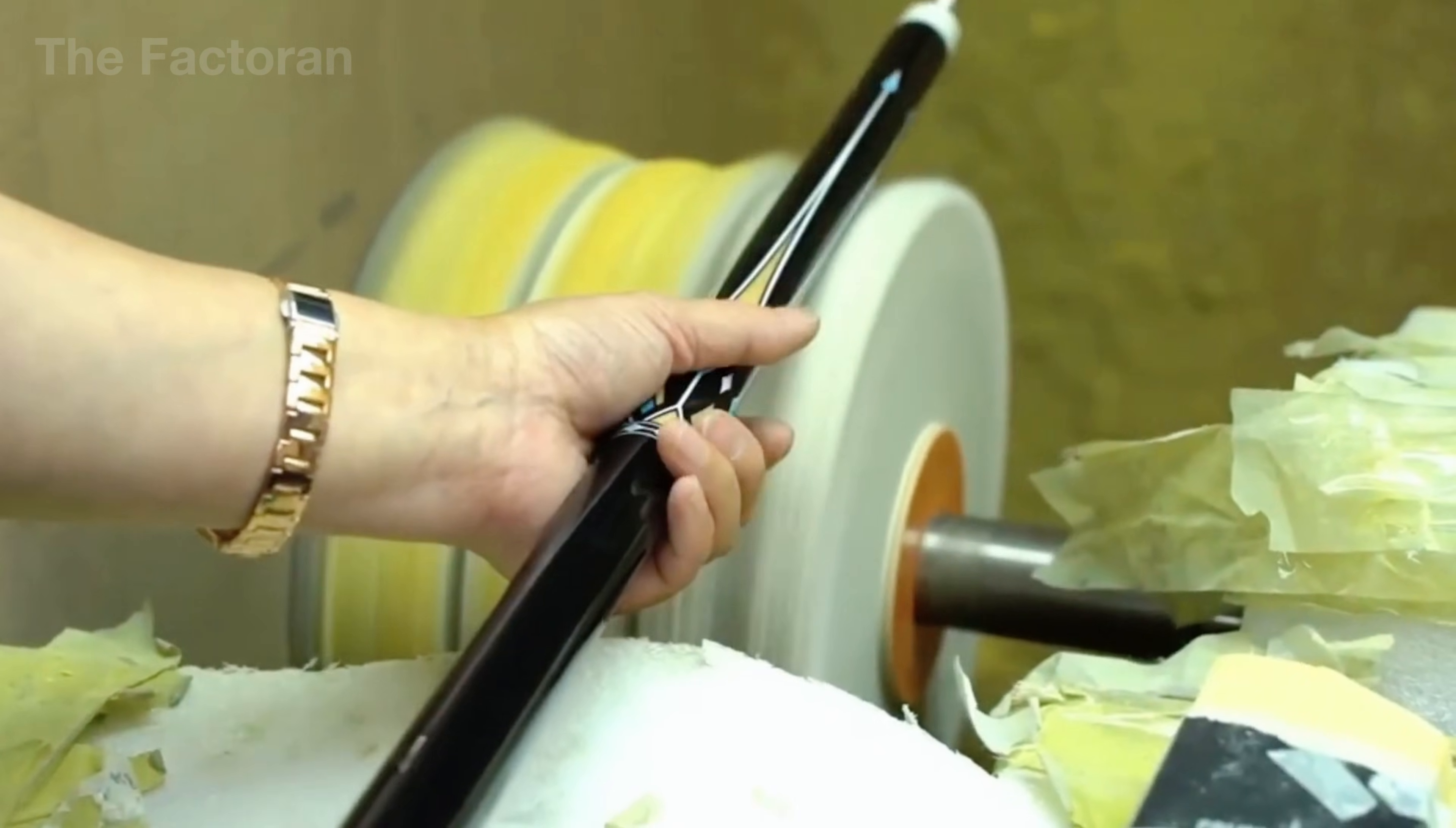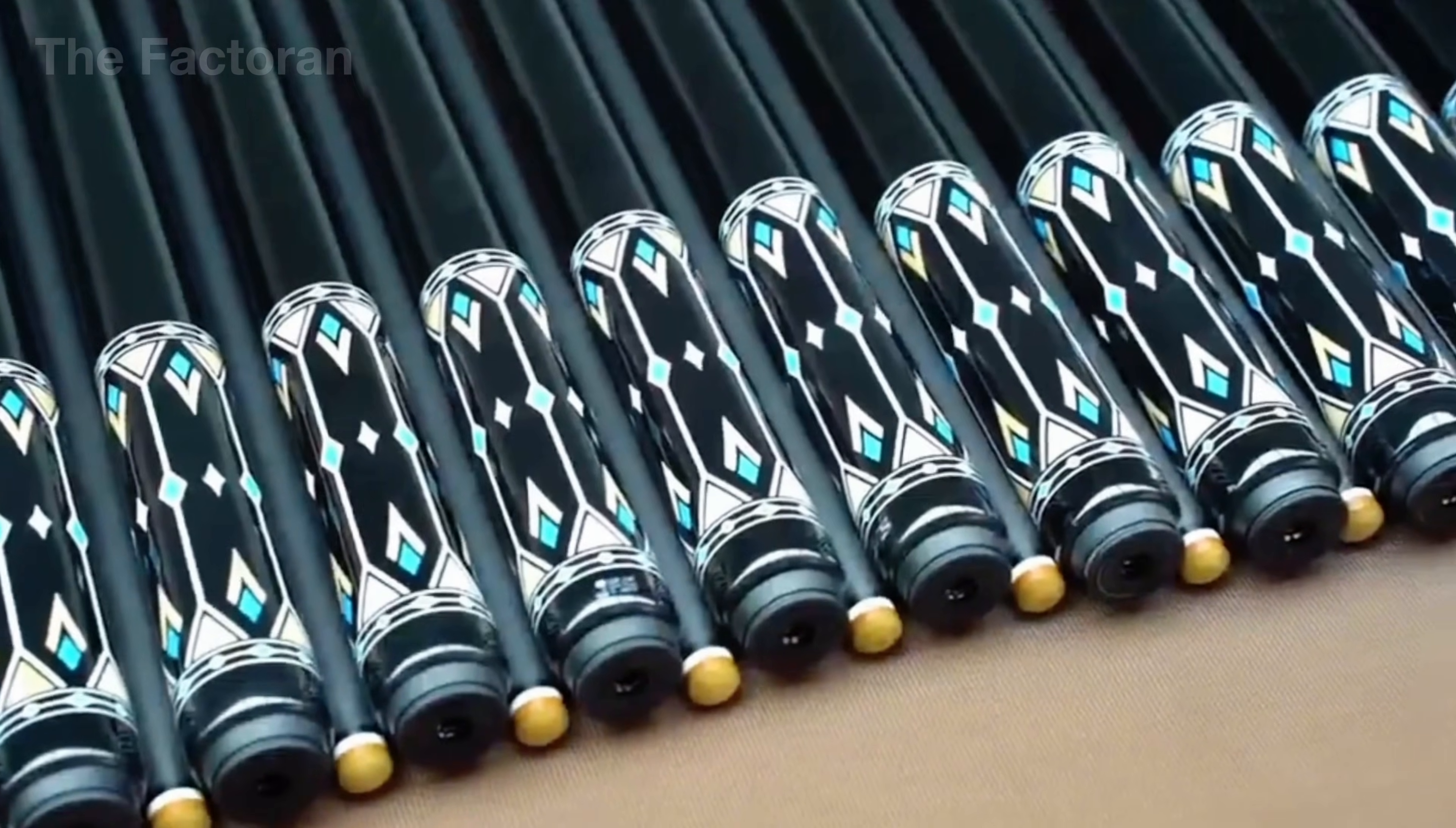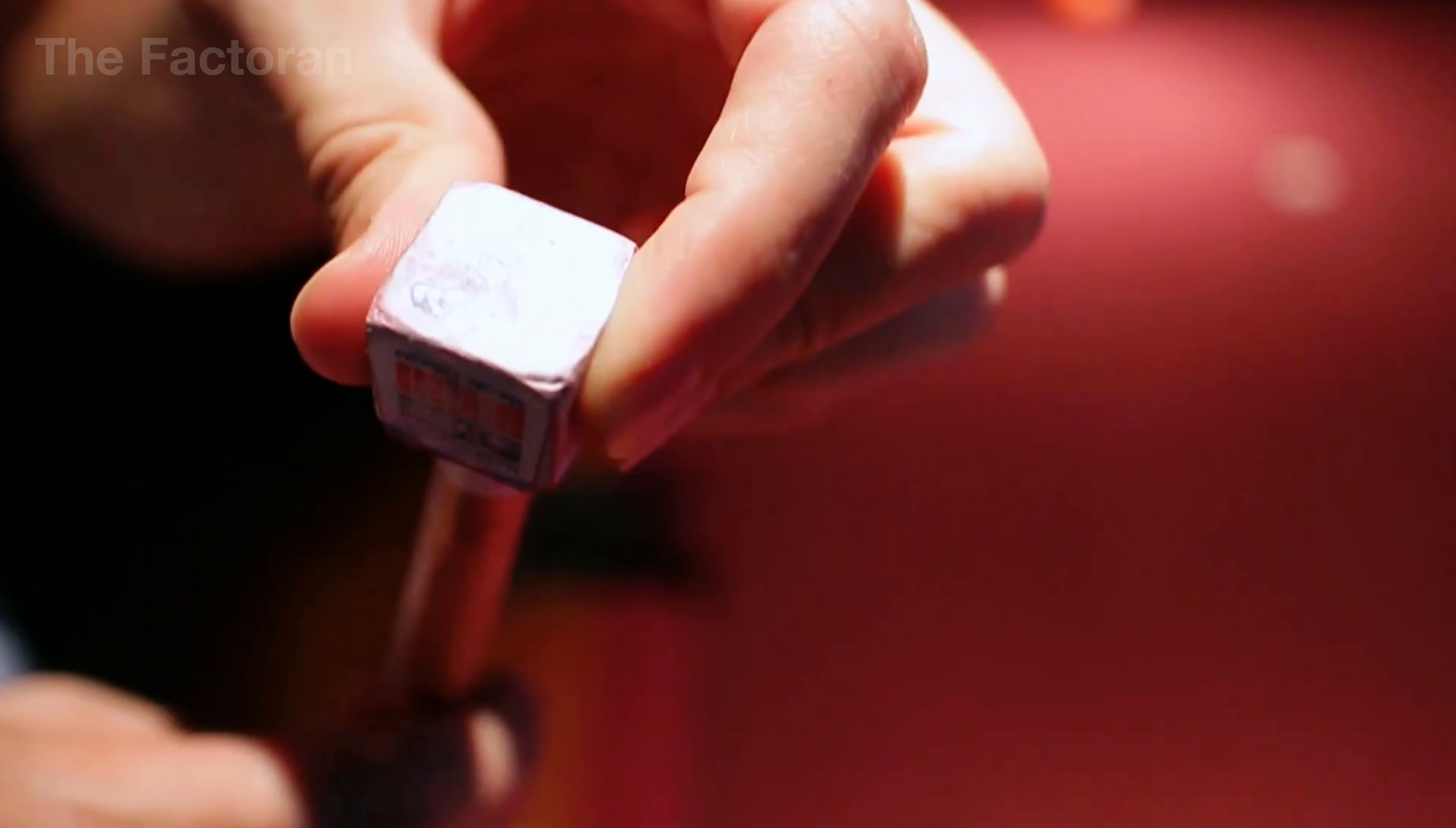Only when all standards have been fully met is the cue wrapped in protective packaging, accompanied by a quality certificate and a unique serial number, ready to leave the workshop and reach the hands of the player. Some factories even go further by designing, sewing, and decorating custom cue cases in their own signature style, completing the product as a fully branded and professionally finished instrument.